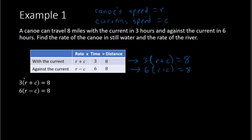So I want to distribute, first of all. So we can do three times R and three times C. That gives me three R plus three C equals eight. Second equation, distribute as well. Six R minus six C equals eight as well. So I have distributed, and from here, I can try to get one of my variables to cancel by using the addition or subtraction method.